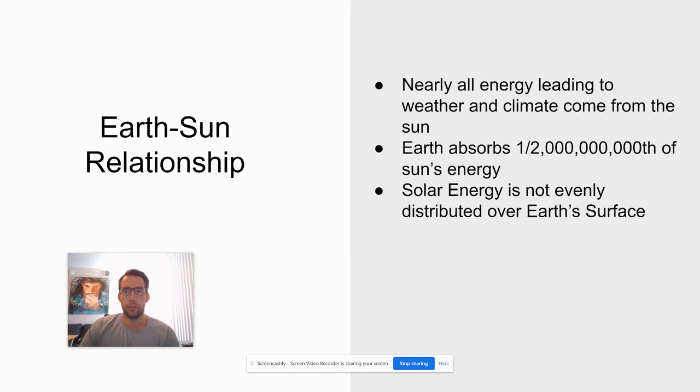We're talking about the Earth-Sun relationship when it comes to weather and climate, because nearly all the energy leading to weather and climate comes from the sun. Earth absorbs only one two billionth of the sun's energy, and yet we still have as warm temperatures here as we do in Arizona. So you can imagine that's a lot of energy that the sun radiates.